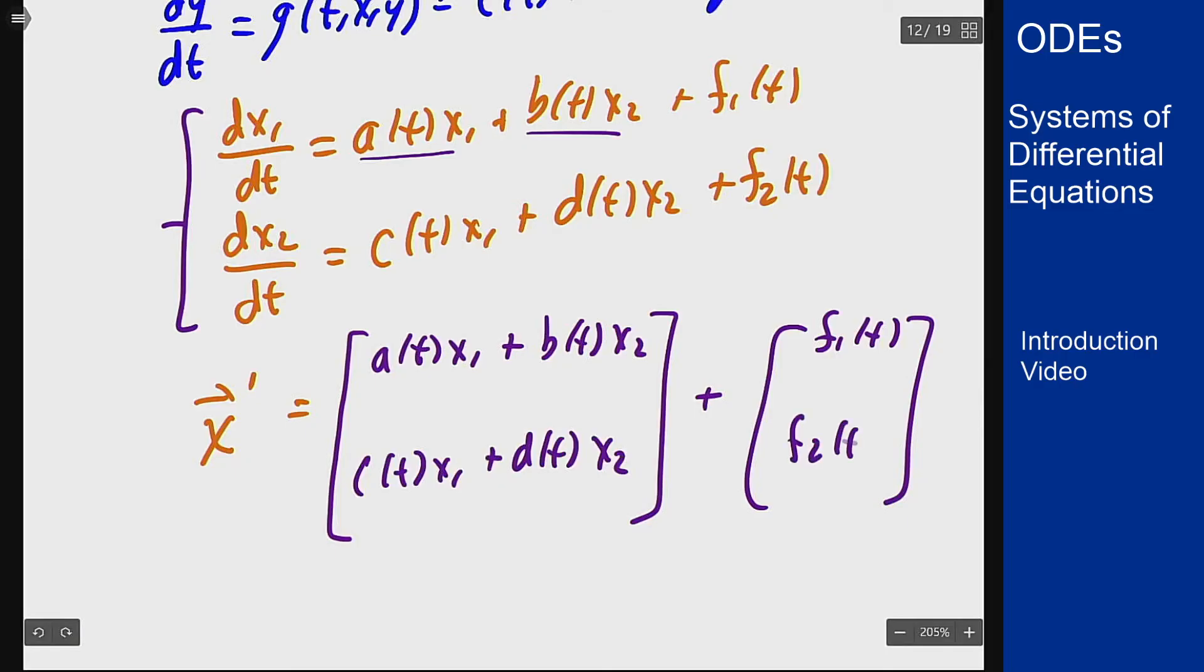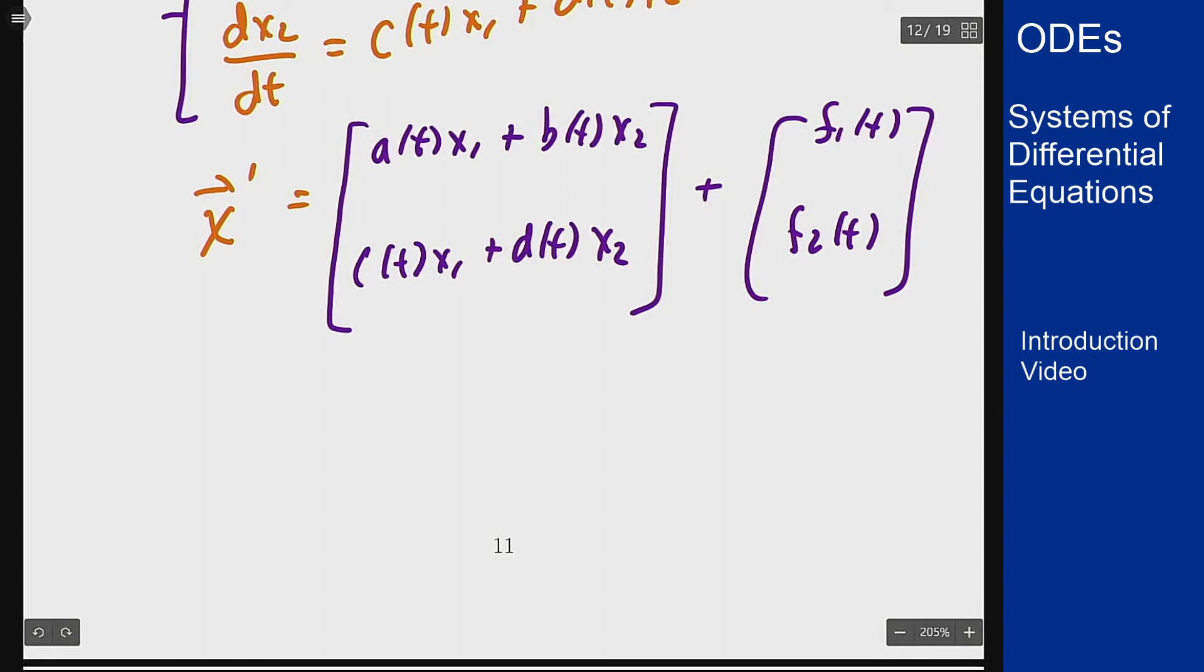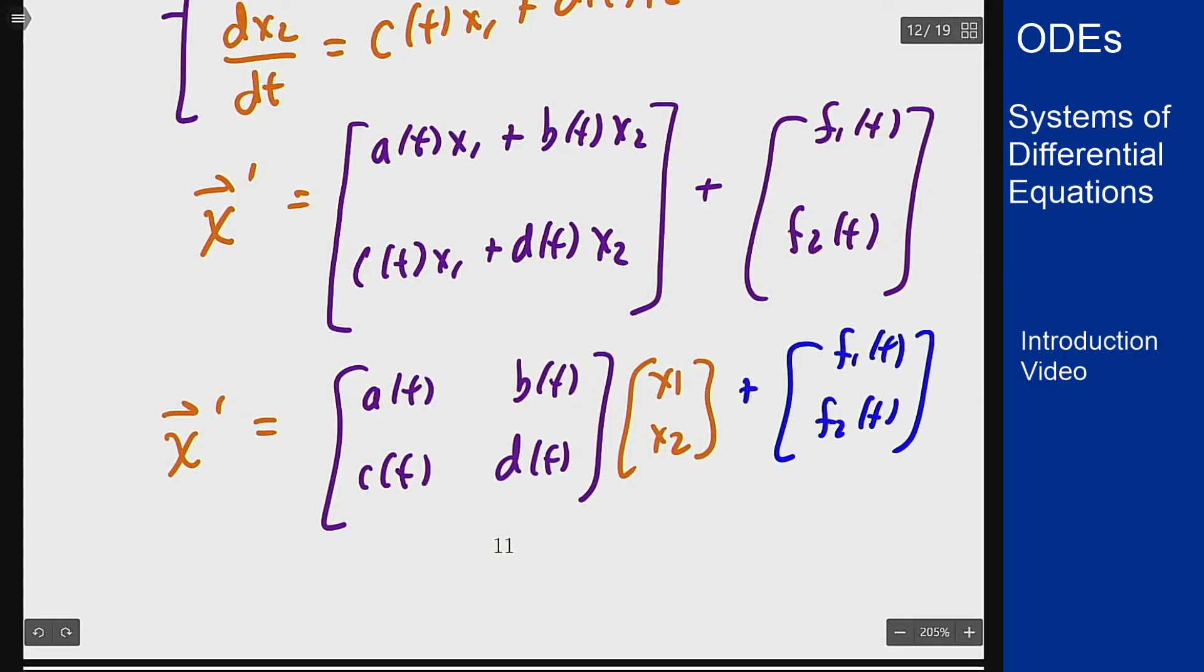There's one more simplification we can make. I can write this expression here in terms of matrix multiplication. So I can write this as x prime equals the matrix a of t, b of t, c of t, d of t times the vector x1, x2, and then tack on this f1 of t, f2 of t. And this here's our vector x all over again.